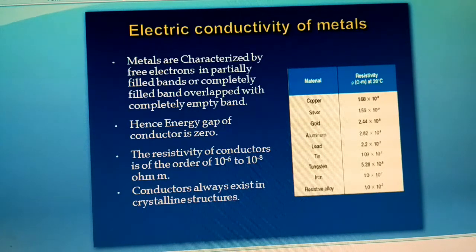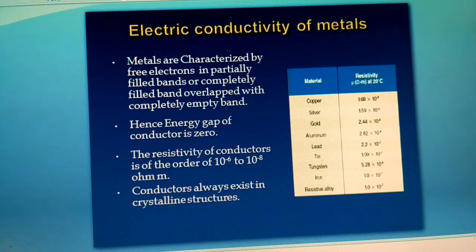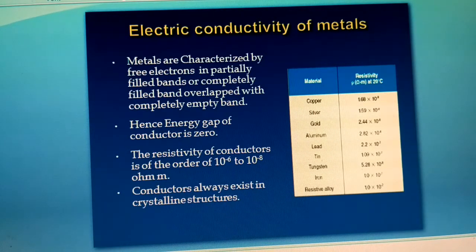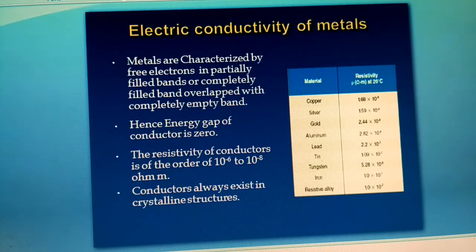In this session, let us understand the electric conductivity of metals. Metals are characterized by free electrons in partially filled bands, or completely filled bands that overlap with completely empty energy bands in bulk metals or conductors. The energy gap of a conductor is zero. The resistivity, which is the reciprocal of conductivity, is of the order of 10⁻⁶ to 10⁻⁸ ohm·meter for conductors.